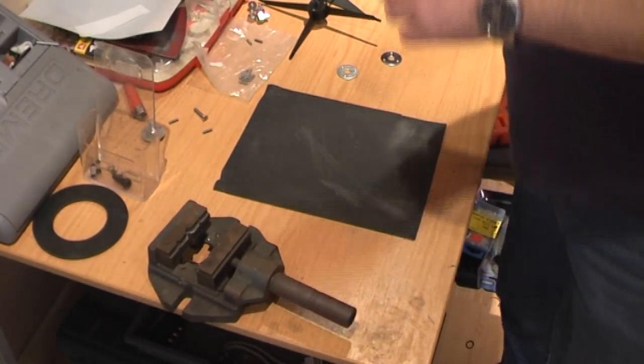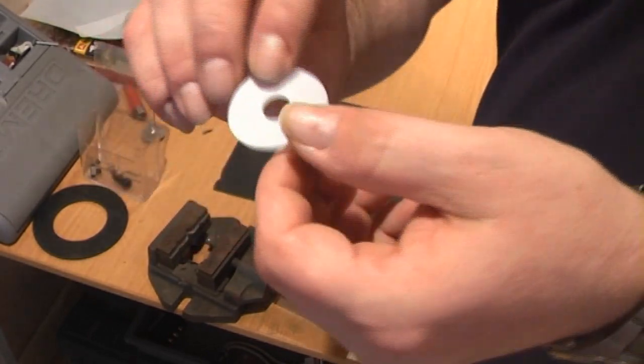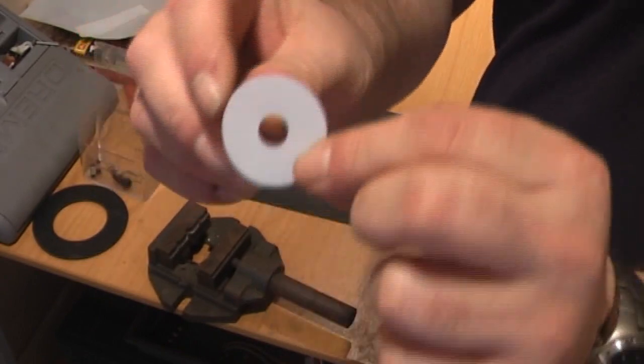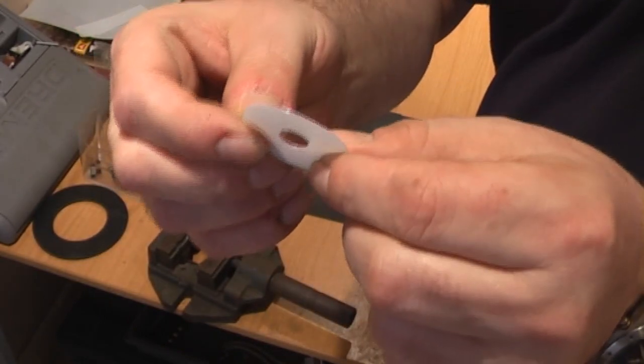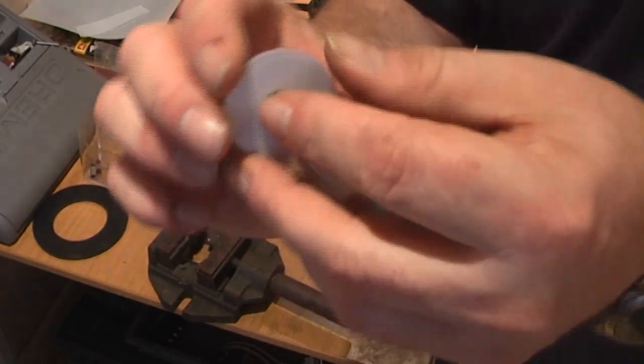Next, I took some 0.25 PTFE sheet like so and made a washer that's the same size.